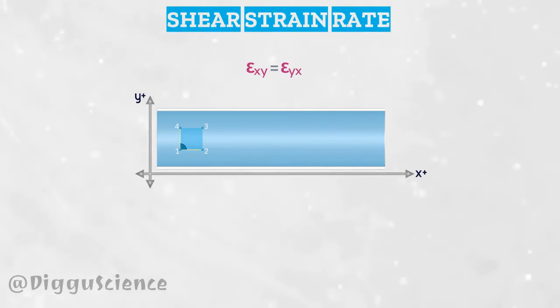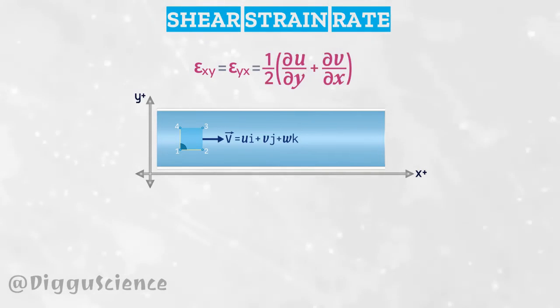If the velocity field of the fluid is a vector v equal to u i hat, plus v j hat, plus w k hat, then the magnitude of epsilon can be written as one-half of the sum of the partial derivative of u with respect to y and the partial derivative of v with respect to x. The greater the value of epsilon of x-y, the faster the angle in the fluid parcel decreases.